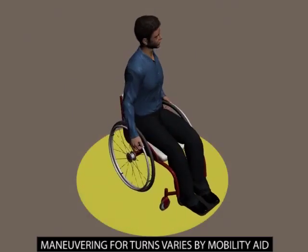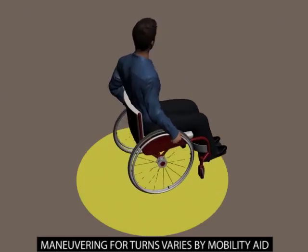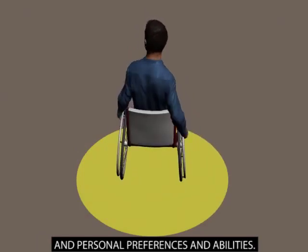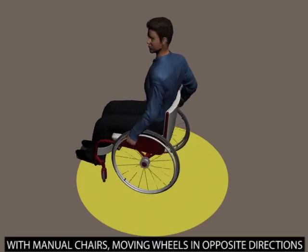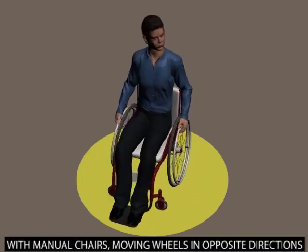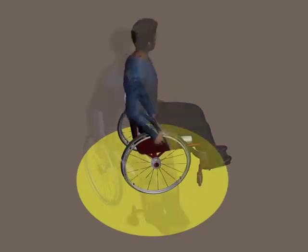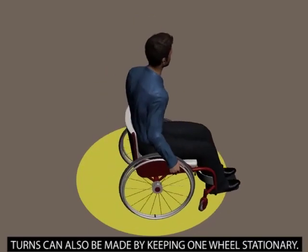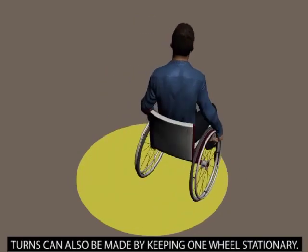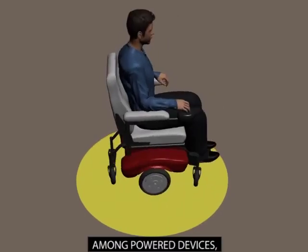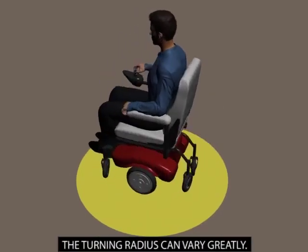Maneuvering for turns varies by mobility aid and personal preferences and abilities. With manual chairs, moving wheels in opposite directions is the most efficient way to turn. Turns can also be made by keeping one wheel stationary. Among powered devices, the turning radius can vary greatly.